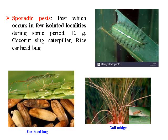Sporadic pests: the pest which occurs in a few isolated localities during some periods. For example, coconut slug caterpillar on rice is very particular to certain regions and causes great damage. Even the ear-head bug on rice also causes great damage in certain regions. The gall fly also has sporadic attacks and is very particular to certain regions.